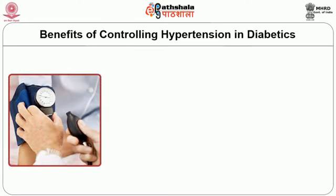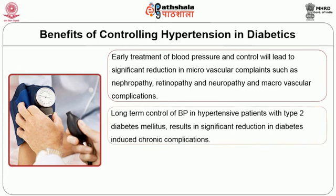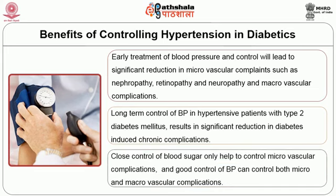Early treatment and control of blood pressure leads to significant reduction in microvascular and macrovascular complications. Long-term control of blood pressure in hypertensive patients with type 2 diabetes mellitus results in significant reduction in diabetes-induced chronic complications. Close control of blood sugar helps to control microvascular complications, and good control of blood pressure can control both micro and macrovascular complications. Weight management, low-fat diet with fibrous fruits and vegetables, good physical activity, and lifestyle changes can help control or prevent hypertension in diabetics. Thank you.